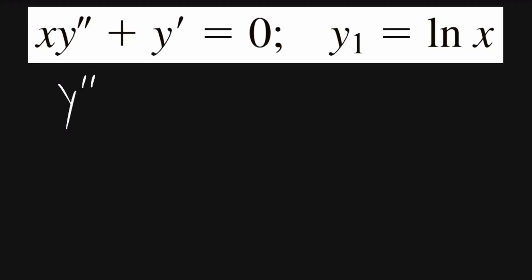For this problem, I'll start by getting the equation to the standard form of y double prime plus p of x times y prime plus q of x times y is equal to 0. To do this I'll divide all the terms by x. We'll get y double prime plus 1 over x times y prime is equal to 0.